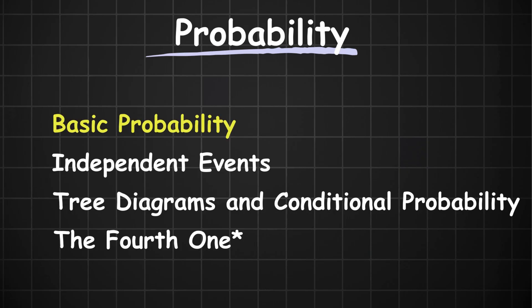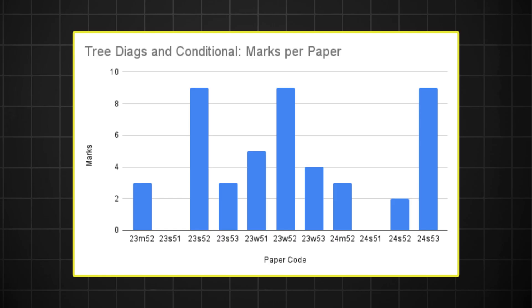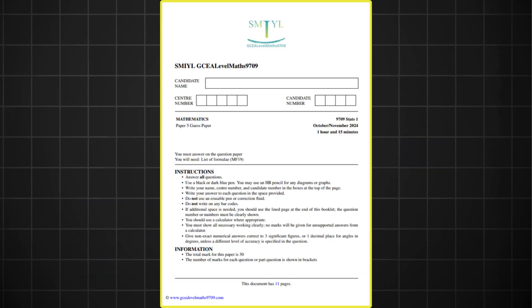The basic probability question, the independent events question, tree diagrams and conditional probability question, and the fourth one, which ties back to combinations. We'll look at that in a bit. Generally, in this topic, the most dominant question is the tree diagram and conditional probability question, which has appeared in nine of the last 11 papers. So be prepared for this one. Because sometimes it does come with a fair few amount of marks. And yes, it's in the guess paper, which we'll talk about later.